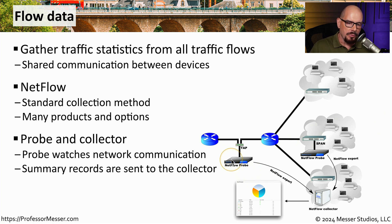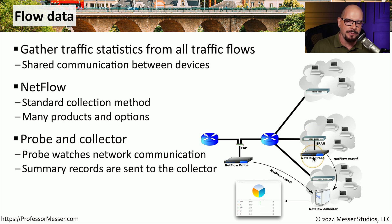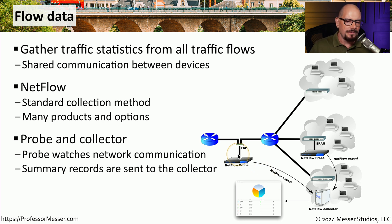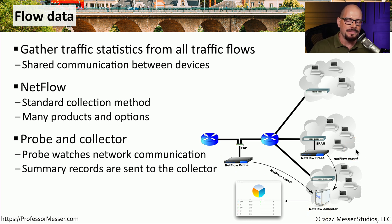NetFlow usually starts with a probe that you put onto your network. This probe may be sitting in the middle of the connection using a physical tap, or may be using a switched port analyzer interface on a switch to gather that information. Raw packets are sent to this NetFlow probe, which compiles statistics based on all of the packets going across your network. The summary of that information is then sent to a single NetFlow collector, so you don't have to go to separate probes to gather all of this detail — you go to the single collector and create all your reports from that one central place.